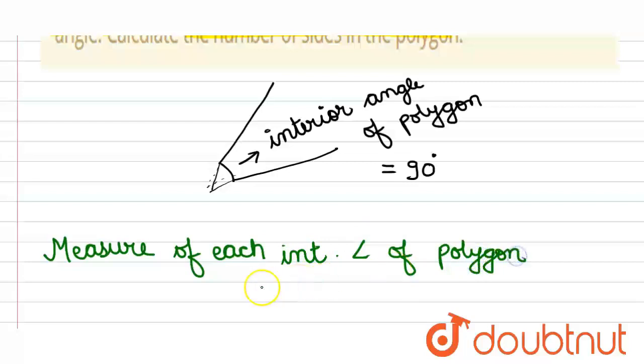And this is (n-2) times 180 degrees whole divided by n. So this is the formula for the measure of each interior angle of a polygon.